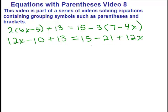Each side is still not simplified because I can combine like terms. So I have 12X plus 3 equals, and on the right-hand side, I've got 15 minus 21, that's negative 6 plus 12X.